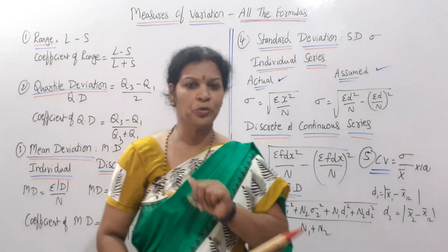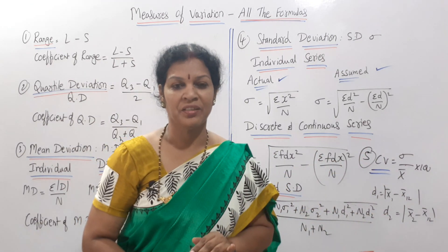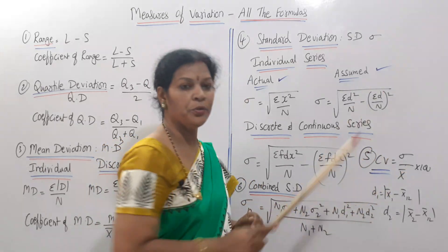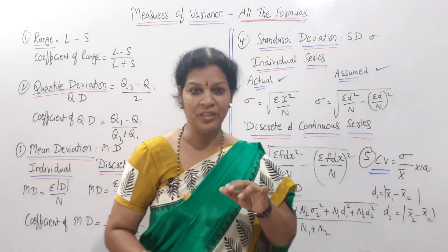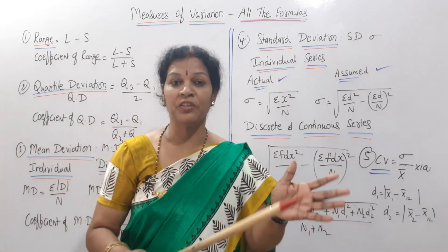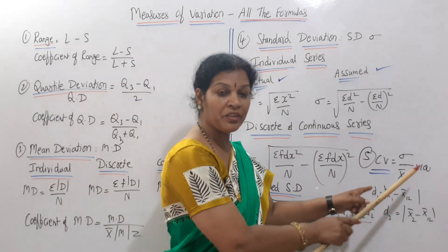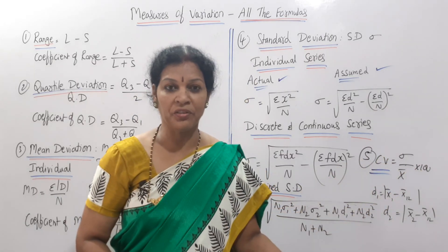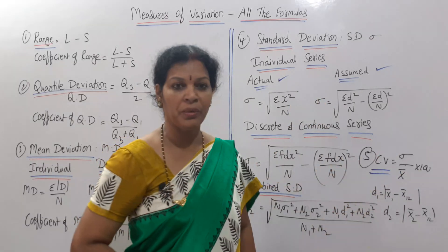Two more formulas to mention: coefficient of variation, or CV. The formula for coefficient of variation is rho by X bar into 100 — that is, standard deviation divided by X bar, multiplied by 100. Coefficient of variation is useful for comparing one variation with another.